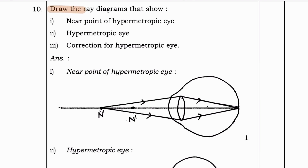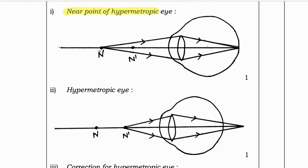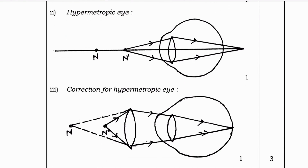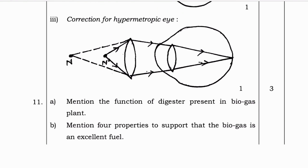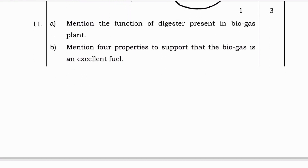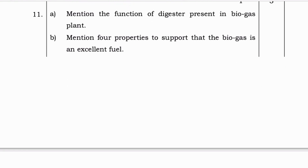Next question: Draw the ray diagrams showing the near point of the hypermetropic eye and the correction for the hypermetropic eye. The first diagram shows the near point of the hypermetropic eye, the second shows the hypermetropic eye, and the third shows the correction for the hypermetropic eye.